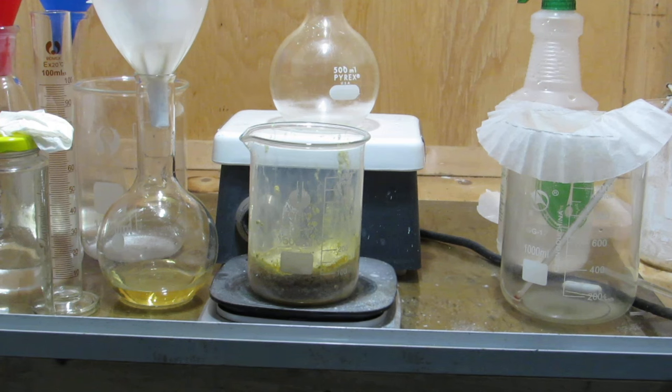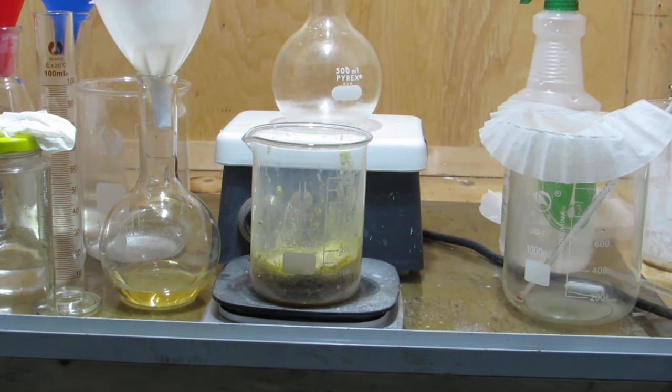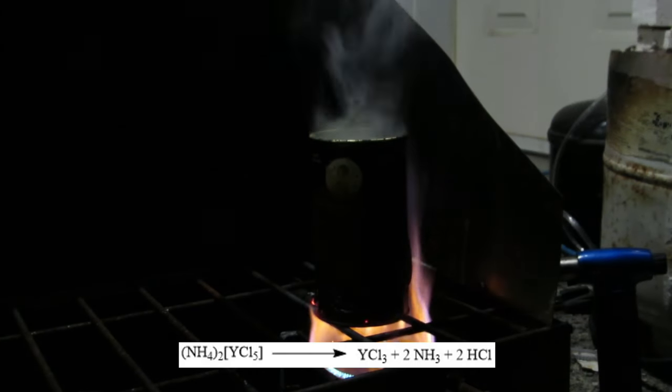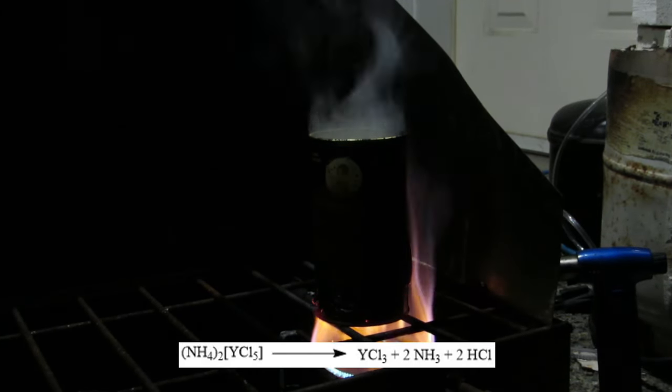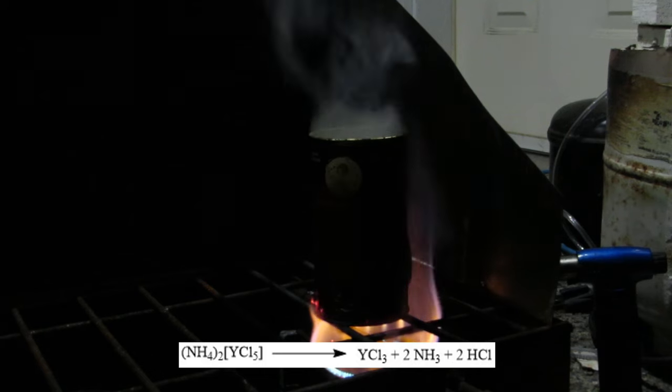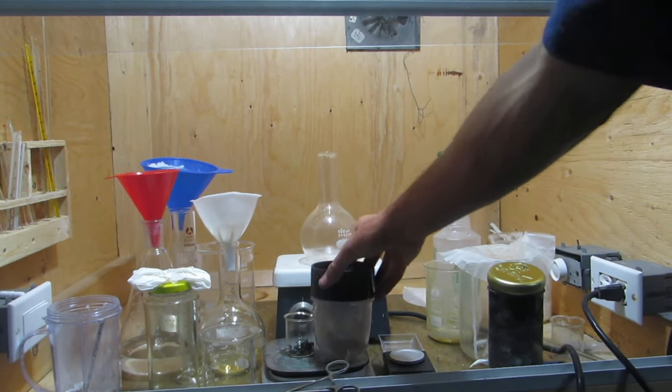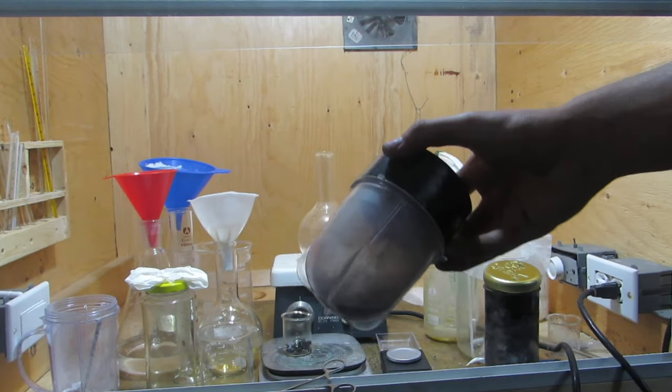After evaporating the solution to dryness, the yttrium ammonium chloride double salt was added to a steel container and fully decomposed on a camping stove. This releases dangerous ammonia and hydrogen chloride vapors, so this must be done outside. After decomposing, the anhydrous yttrium chloride was crushed in a blender and weighed 24 grams.